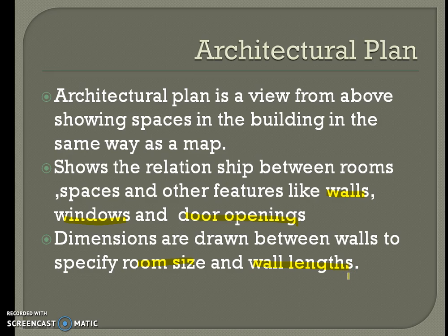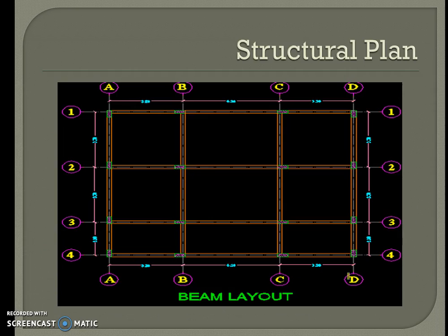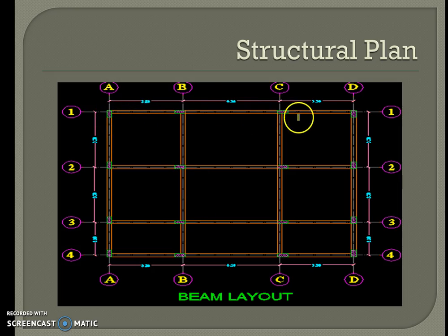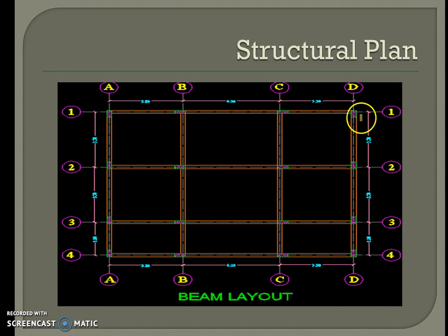In order to build this, the architectural plan has to be converted to a structural plan. A structural plan looks something like this — it shows the position of the load-carrying members, specifically the columns and beams. You can see that the columns are located at the corners and at the intersection of the beams or walls.